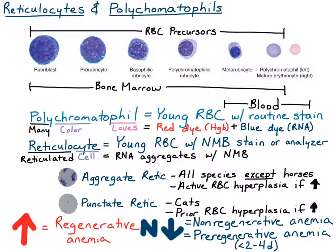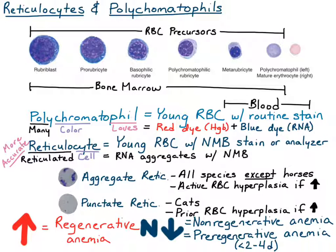If you have the option of choosing between assessing regeneration based on the number of polychromatophils you see on a blood smear versus the number of reticulocytes given by your hematology analyzer or by manual counting methods, choose the reticulocyte concentration. That is a more accurate and precise way to assess regeneration in the patient.